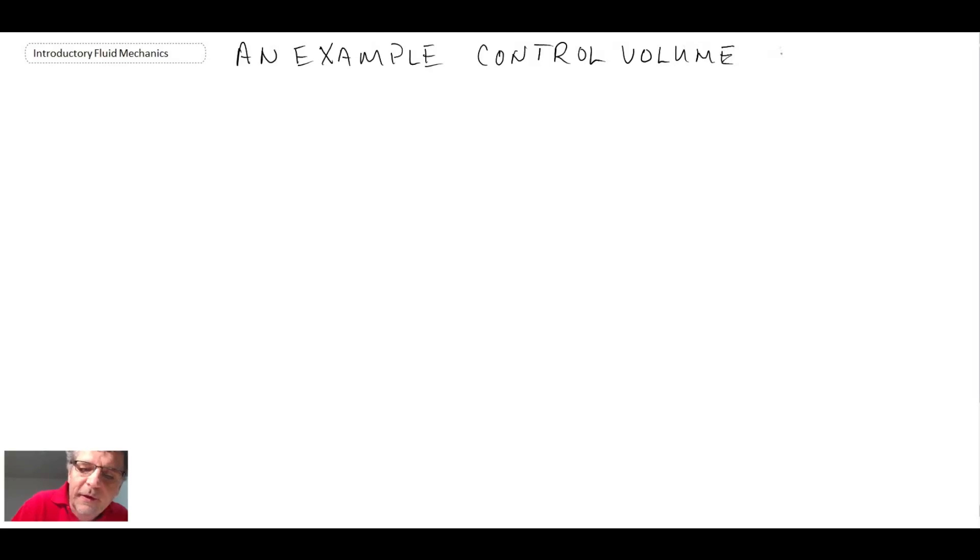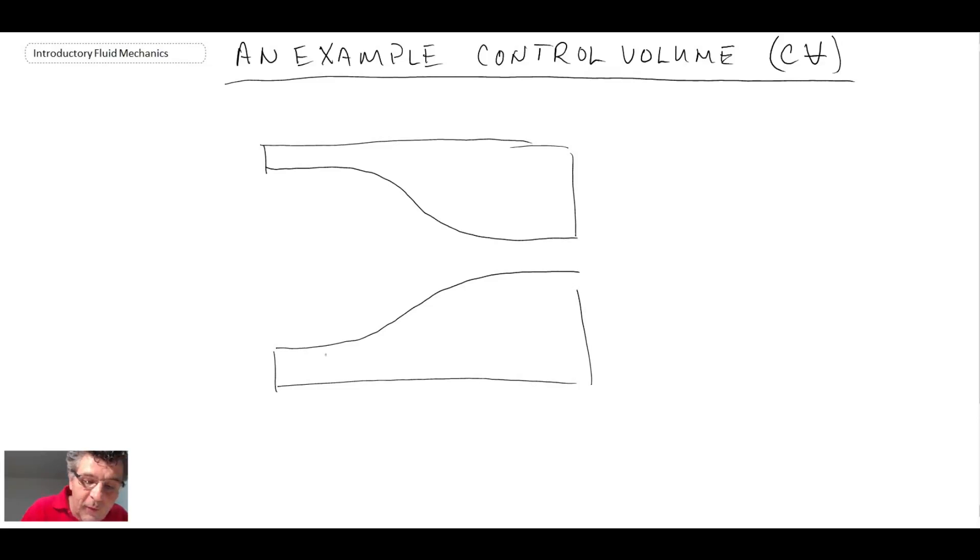And sometimes what you'll see me do is something like this. That is an abbreviation for control volume: C, V, with a line through it. So let's take a look at something we can all relate to. Let's say we have a jet. So we have a flow. It could be a garden hose nozzle or something like that. But it would accelerate the fluid coming through it. And so let's say this is all solid.